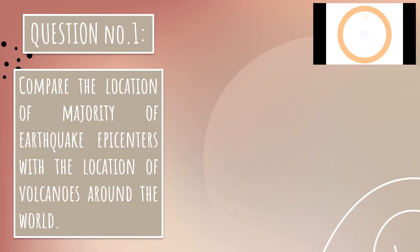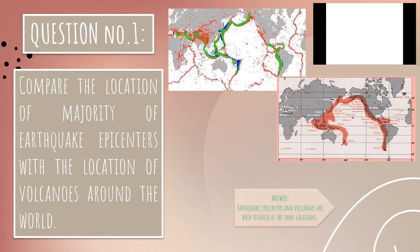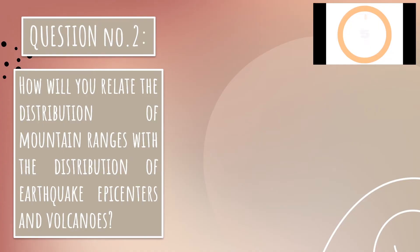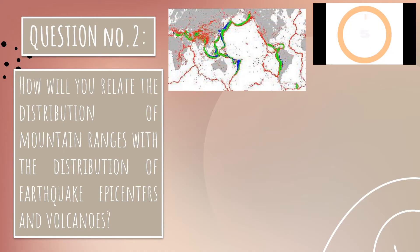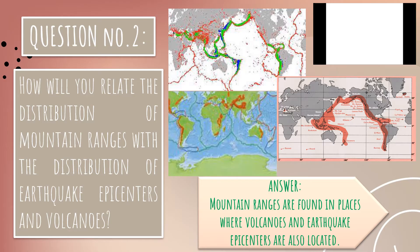For question number 1: Compare the location of majority of earthquake epicenters with the location of the volcanoes around the world. The answer is earthquake epicenters and volcanoes are both situated at the same locations. For question number 2: How will you relate the distribution of mountain ranges with the distribution of earthquake epicenters and volcanoes? The answer is mountain ranges are found in places where volcanoes and earthquake epicenters are also located. Good job, my dear students! Are you ready to learn something new today? Let's get started!